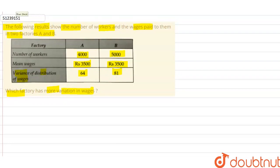In both factories, the mean is the same. The number of workers is different, but the variance is different. So, when we talk about sigma square, sigma square A, the variance of A is 64. Sigma square B, the variance of B is 81.